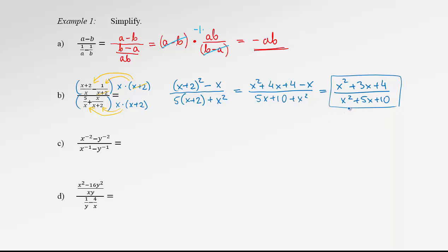Let's see the third example. Here we have hidden fractions because of those negative exponents. Let's see them clearly without negative exponents: x to the negative 2 is 1 over x squared, then minus 1 over y squared — everything over 1 over x, minus 1 over y. I'm going to use the LCD method, because the more denominators we have, the better it is to use the LCD method.